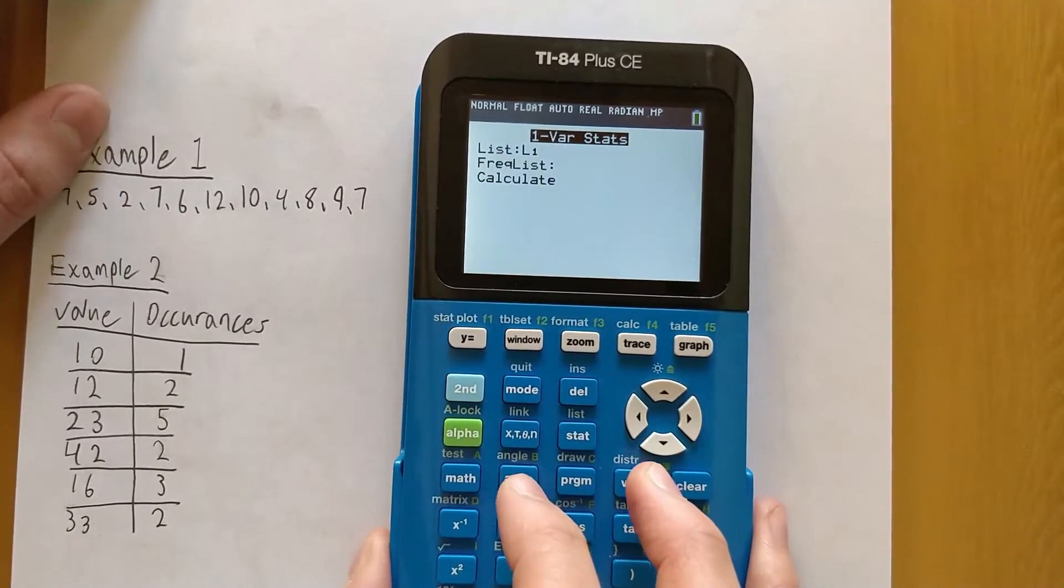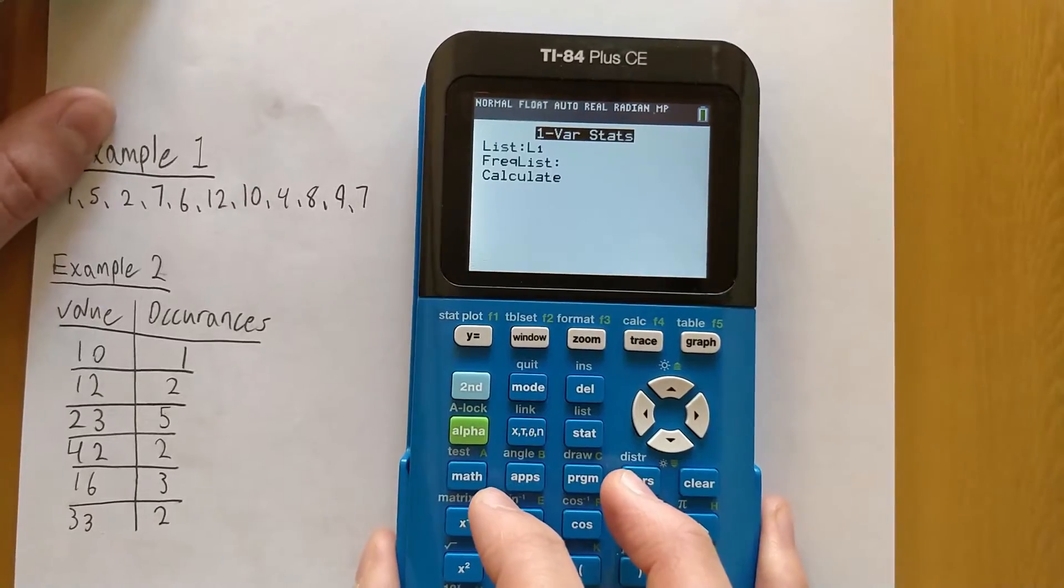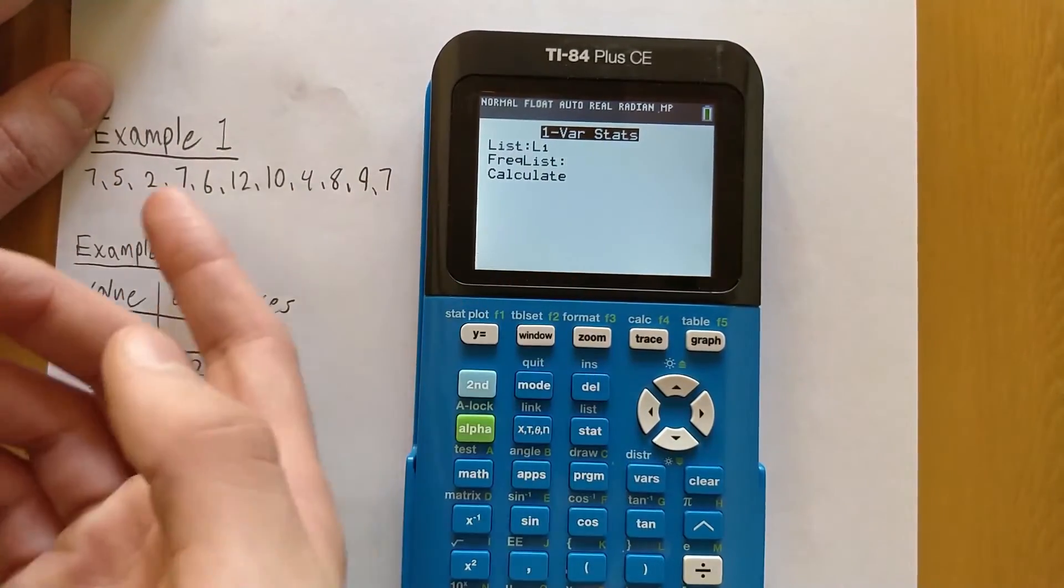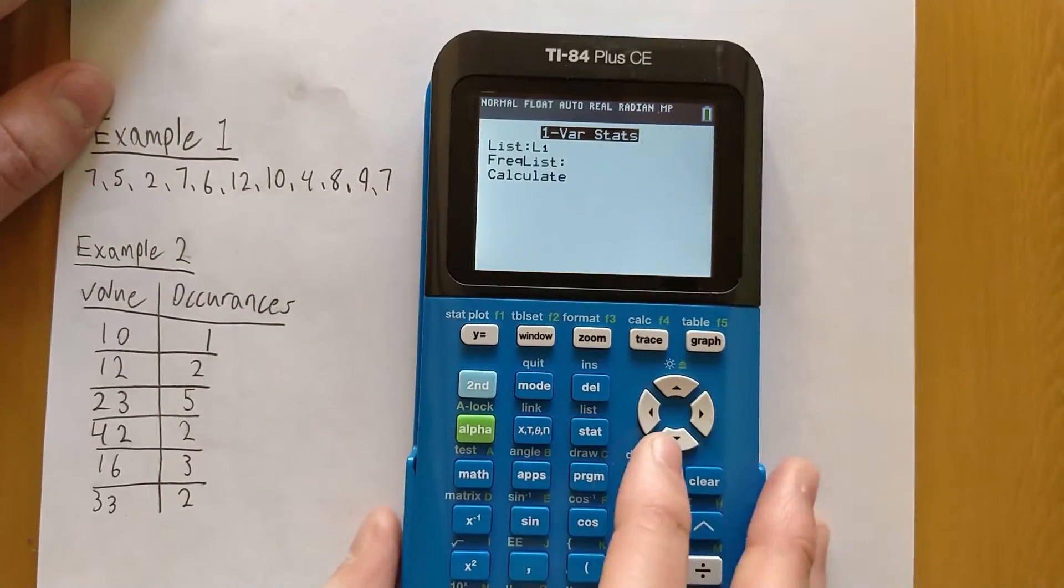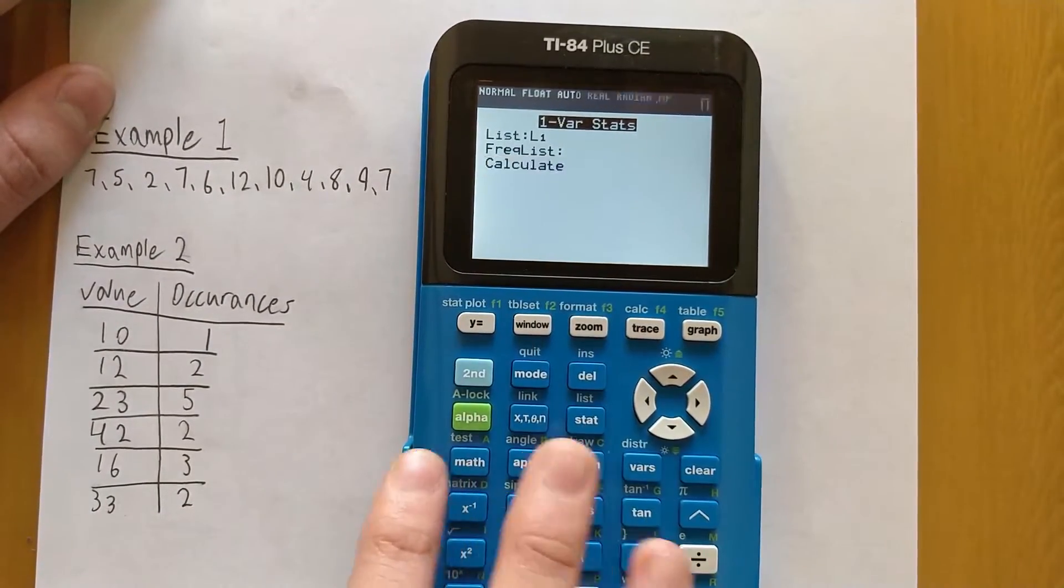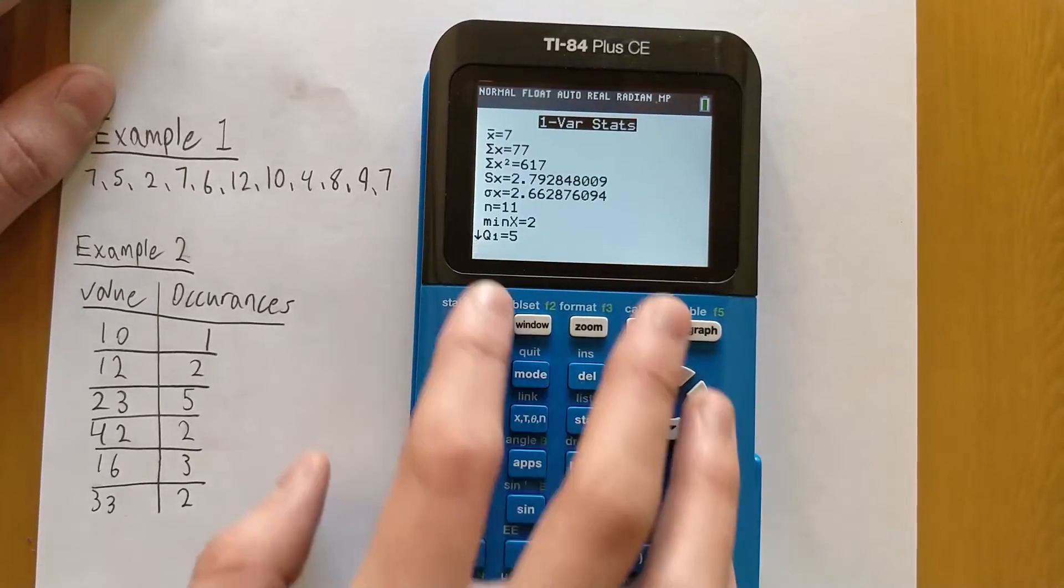Frequency lists are basically a list that contains the number of times each value occurs. We have that in Example 2, but Example 1 is just a straight list of numbers, so we don't have to worry about that. Now we can press Calculate and it will give us all of our values here.